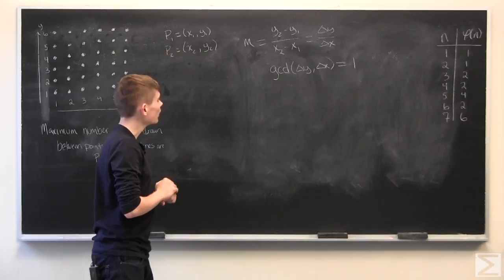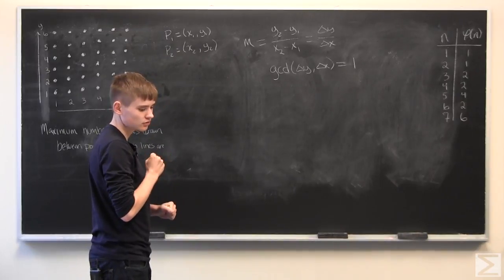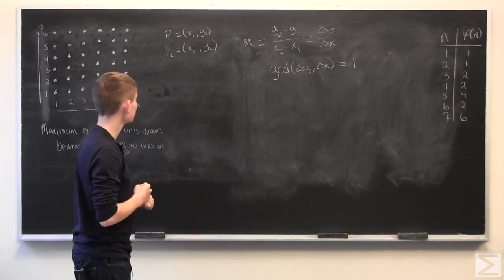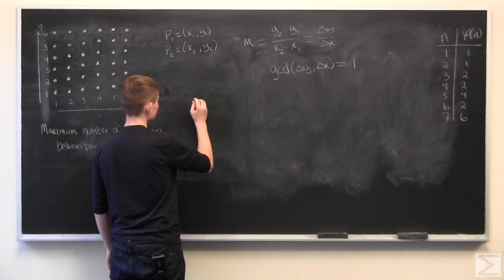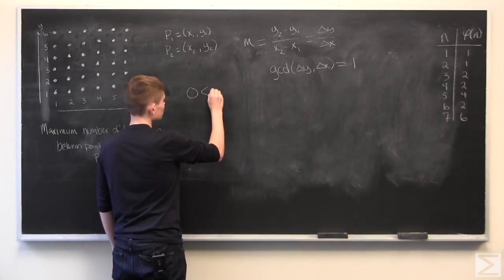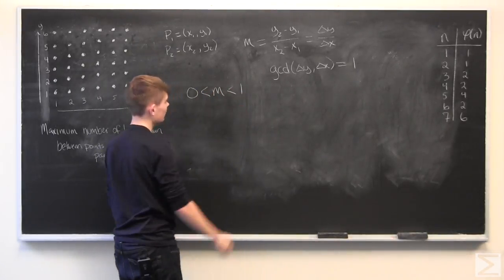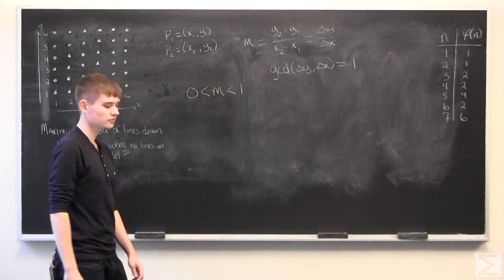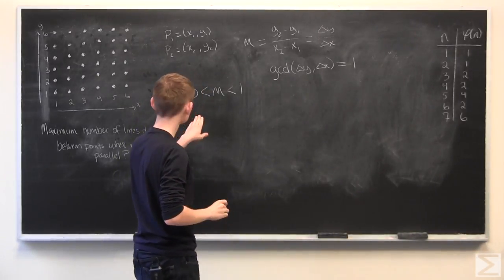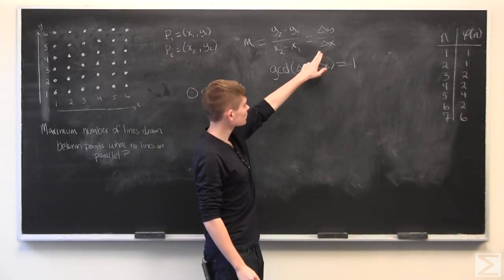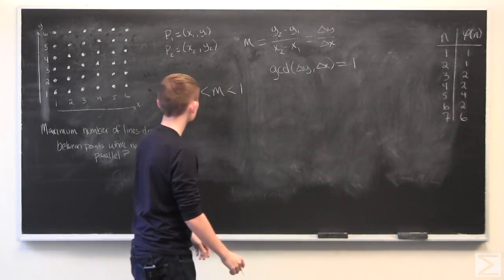Now, the next thing we should do is to start breaking this up into different sections. And the first section we're going to look at is positive slopes that are less than one.